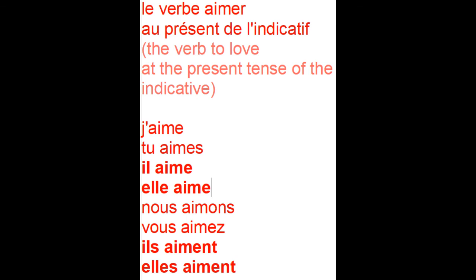Because this is the indicative, we say: j'aime, tu aimes, il aime ou elle aime, nous aimons, vous aimez, ils ou elles aiment. 'Ou' means 'or' in English.